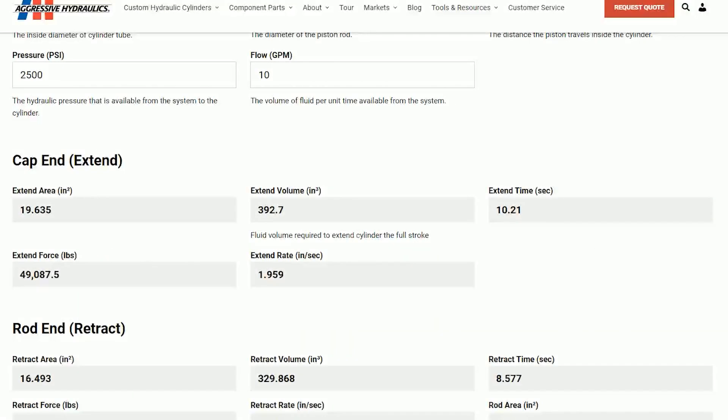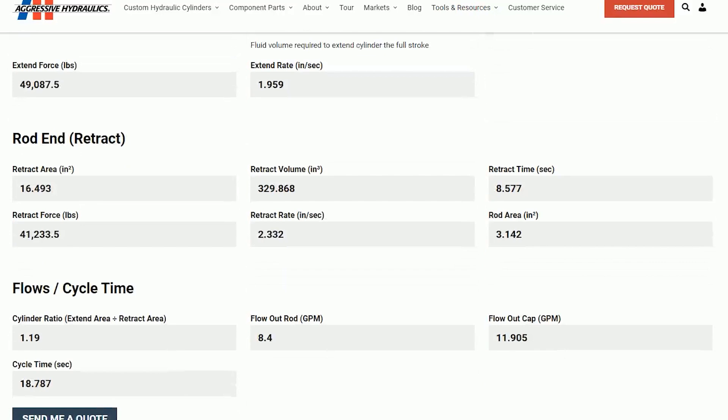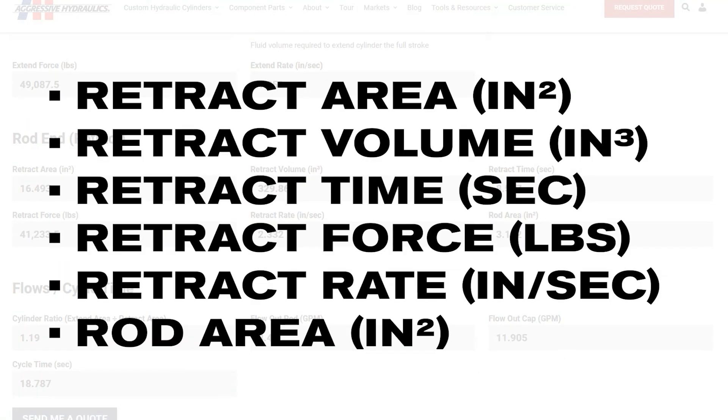For the rod end of the cylinder, these are the retract properties. Like the extend properties, the form calculates the area, volume, time, force, and rate, as well as the rod area.